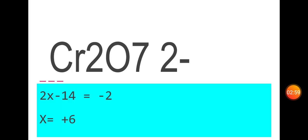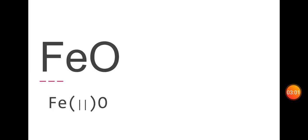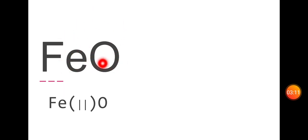Question number 3, concept number 3: Stock notation. We will continue with the oxidation state concept. This uses Roman numerals — stock notation. If the oxidation state is minus 2, then what is the corresponding plus 2? Because they must be equal to zero — Roman numerals represent the stock notation.